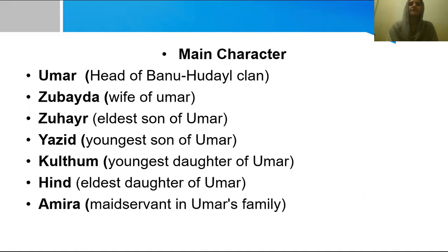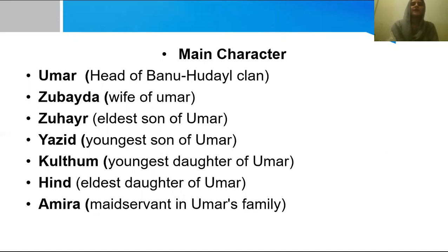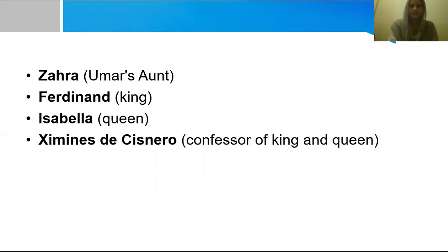Here are the main characters in the novel. The first one is Umar, head of the Banu Hudayal clan. Zubedha, wife of Umar. Zuhair, eldest son of Umar. Yazid, youngest son of Umar. Kulthum, youngest daughter of Umar. Hind, eldest daughter of Umar. Amra, maid servant in Umar's family. Zahra, Umar's aunt. Ferdinand, King. Isabel, Queen. Cisneros, Confessor of King and Queen.